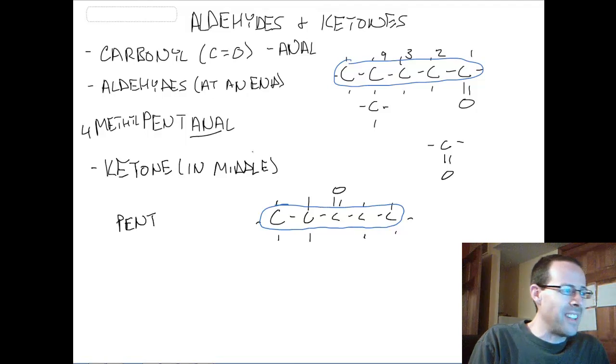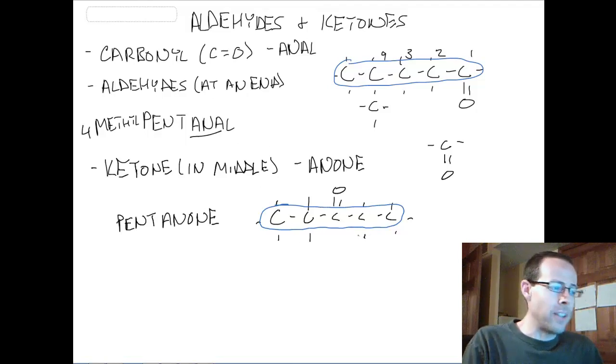But instead of having the suffix an-al, it has the suffix an-one, because it is a ketone. So again, it has the suffix an-one instead of an-al. And simply, it's called pentanone.